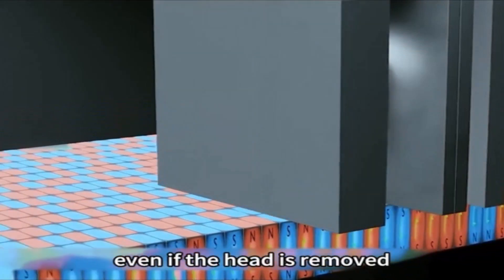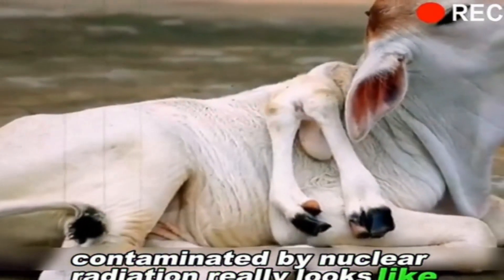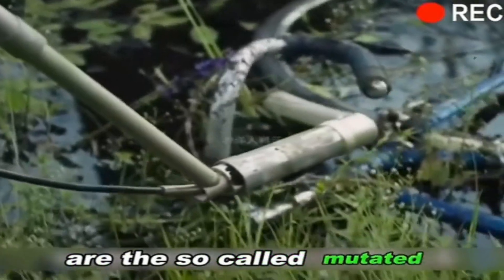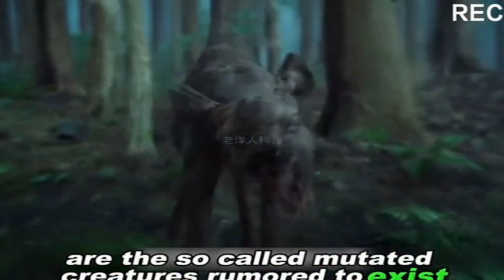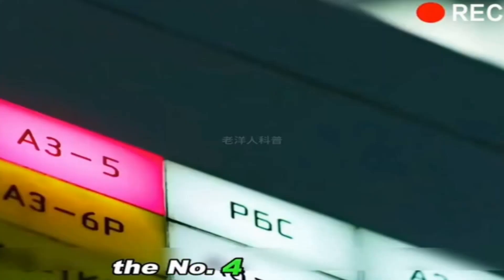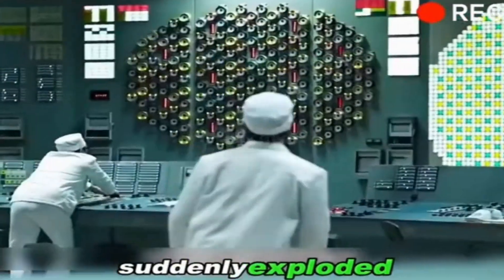Do you know what an animal contaminated by nuclear radiation really looks like? After the horrific Chernobyl incident, are the so-called mutated creatures rumored to exist really real? In the early hours of April 26, 1986, the No. 4 reactor at the Chernobyl nuclear power plant in northern Ukraine suddenly exploded.